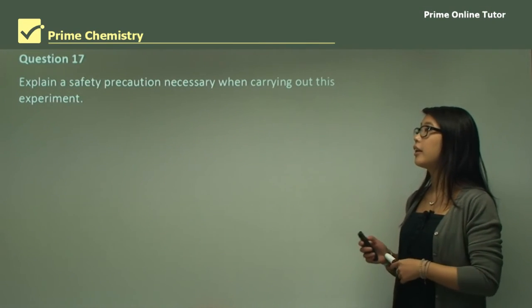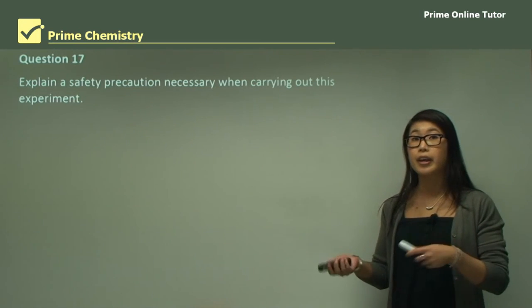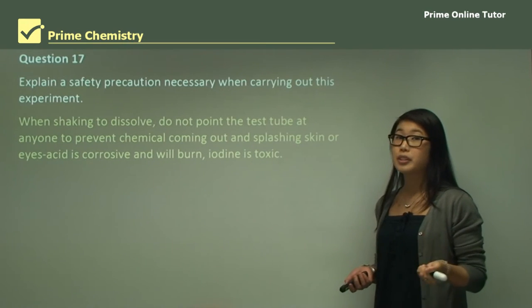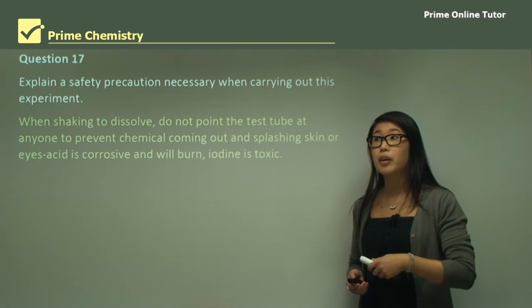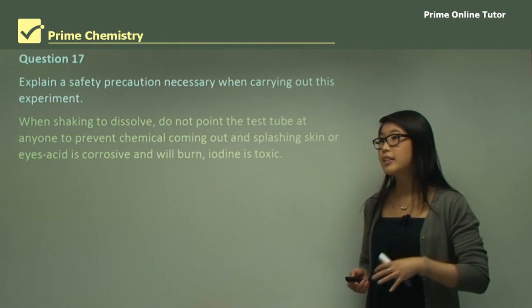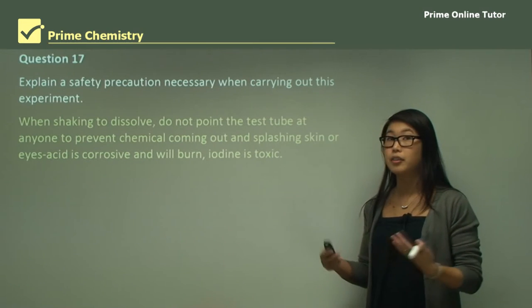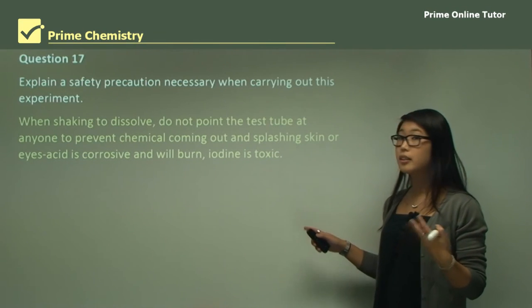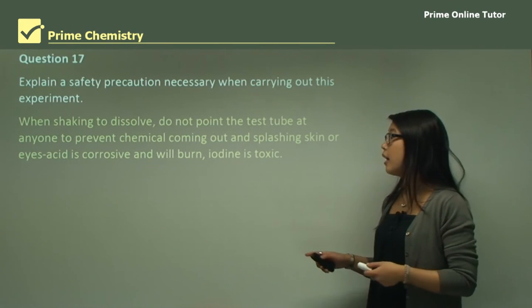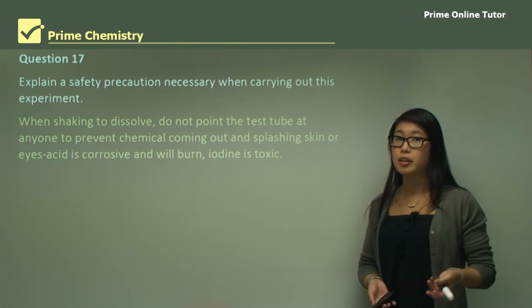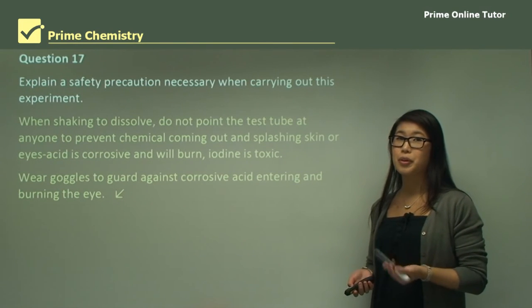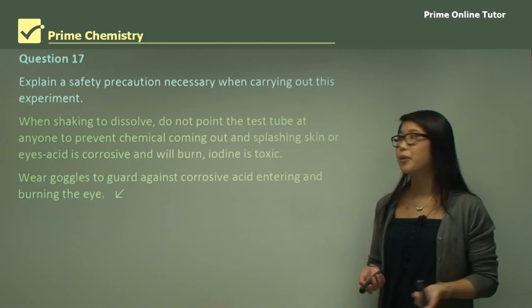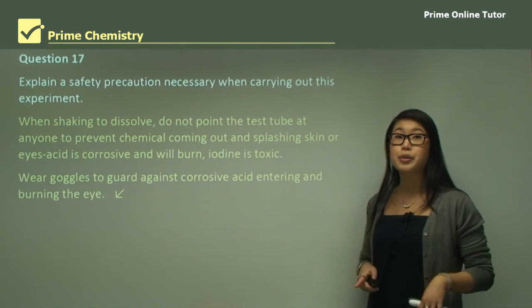Question 17: explain a safety precaution necessary when carrying out this experiment. When we're shaking to dissolve the substance, we need to make sure we don't point the test tube at anybody. If you accidentally let it go, it can fly into their face, or if the stopper comes out, the chemical can come out and hit them in the face. This is really important because some of the things will be acid that you're testing, and this can really burn your eyes, and iodine is toxic. We can also wear goggles to guard against corrosive acid entering and burning the eye.